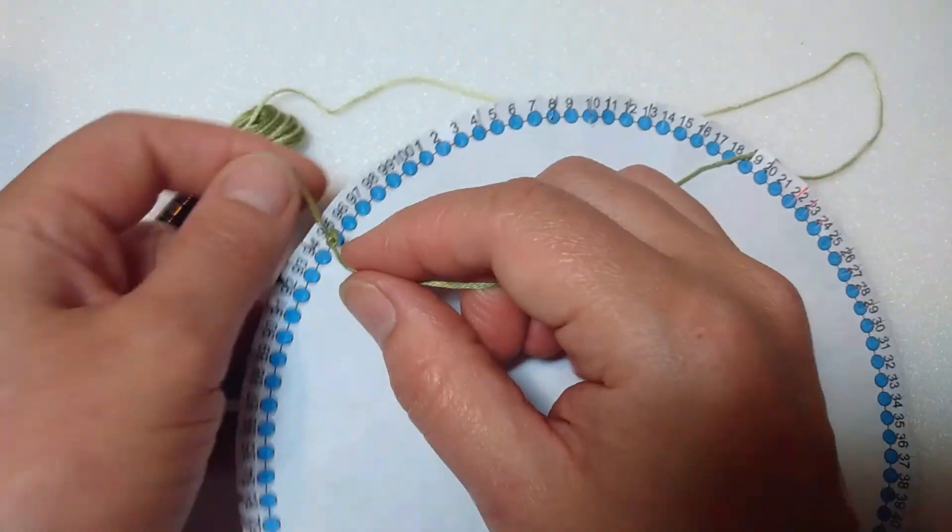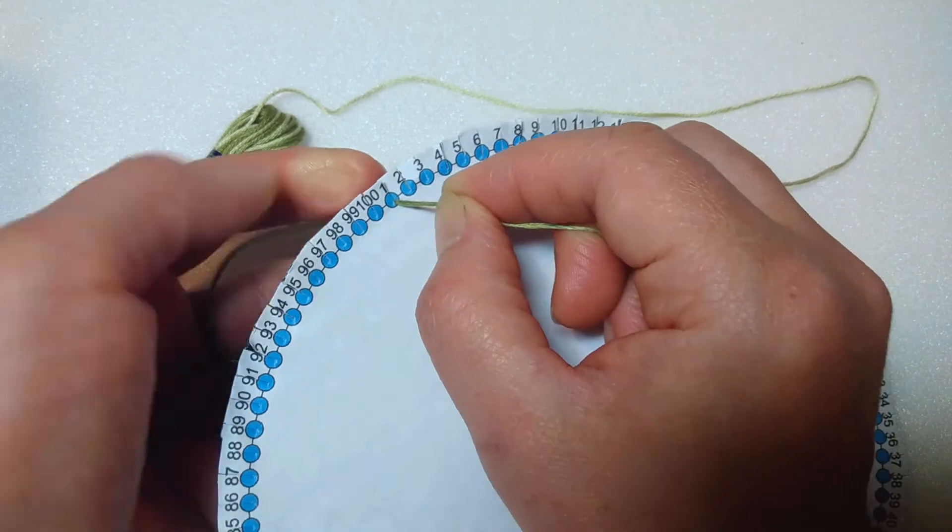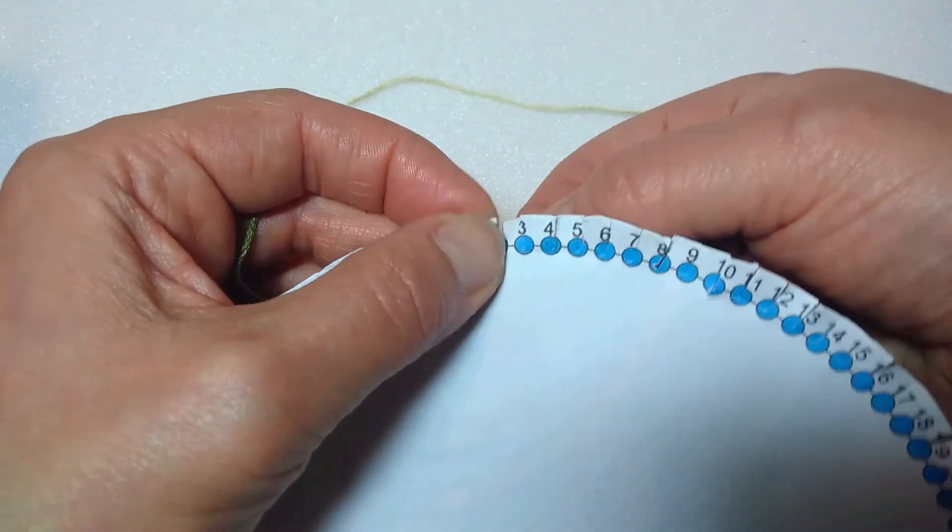Knot the end of your thread and starting at point 1, bring the thread out through the groove at 1 and into the groove at point 2.